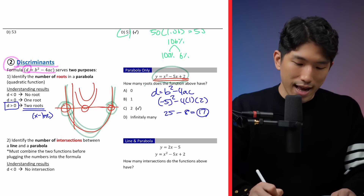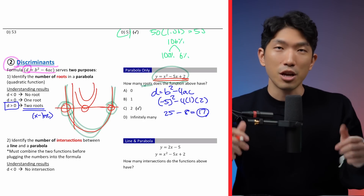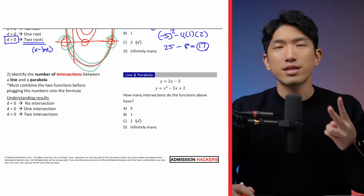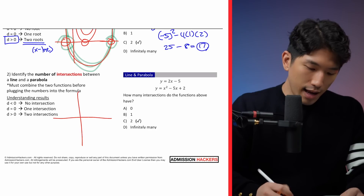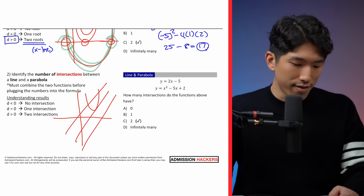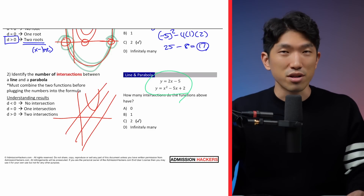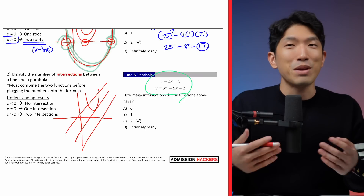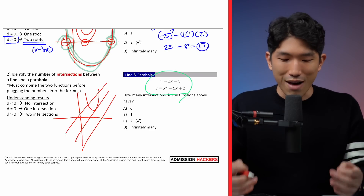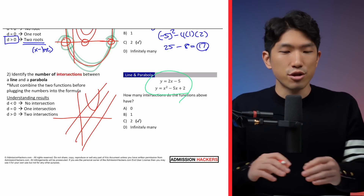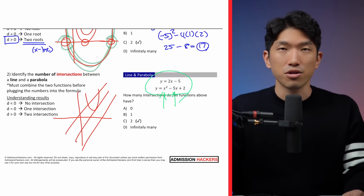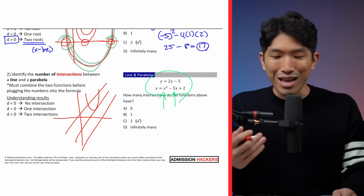Whenever the question gives you a parabola and asks you to find the number of roots, simply use the discriminant and plug it into the equation. The second usage of discriminant is to find the number of intersections between a line and a parabola. A line and a parabola could have one solution, no solution, or two solutions. When you're given just equations, it's hard to tell. The College Board is coming up with questions where simply plugging into a graphing calculator won't get you the answer — especially when there are variables inside the quadratic or linear function.